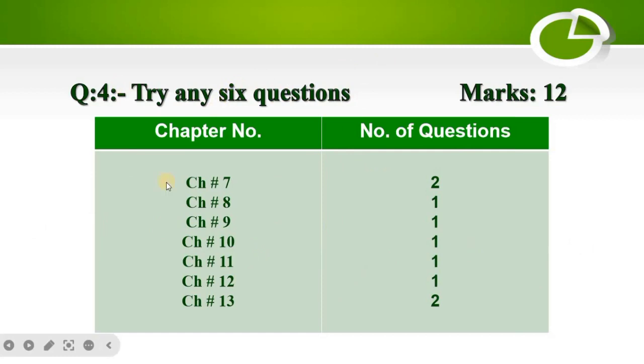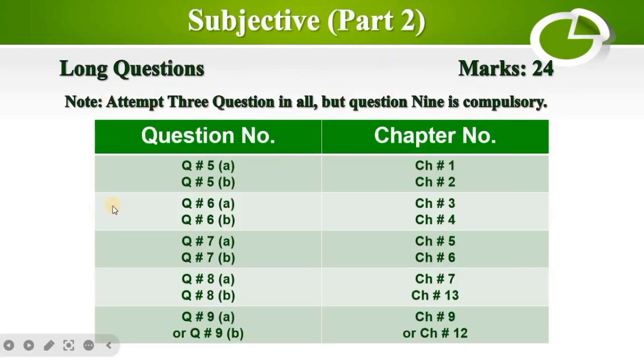For long questions: Question number 5 covers chapters 1 and 2, question number 6 covers chapters 3 and 4, question number 7 covers chapters 5 and 6, and question number 8 covers chapters 7 and 13. You need to understand that chapters 8 and 12 appear in question number 9, which is compulsory.